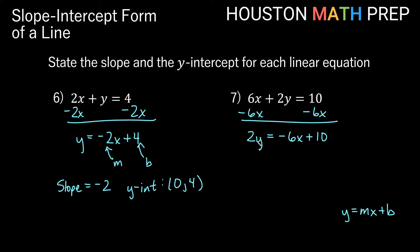We have the y term by itself, but not y equals — we still have times 2, so we need to do the opposite, which is divide by 2. After dividing by 2, we get y equals negative 3x, and 10 divided by 2 gives us plus 5. So our m is negative 3 and our b is 5.